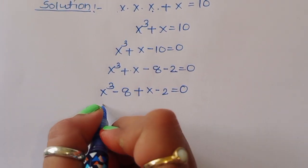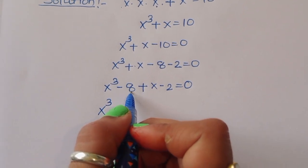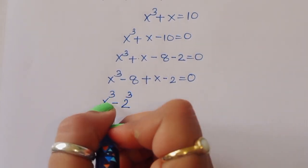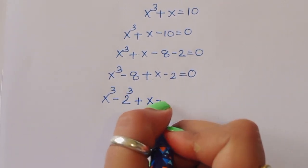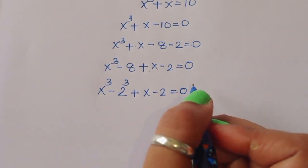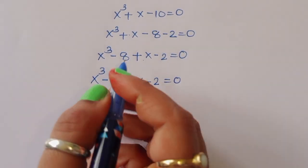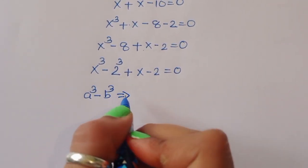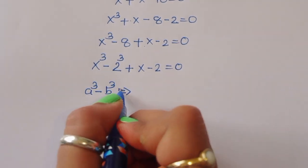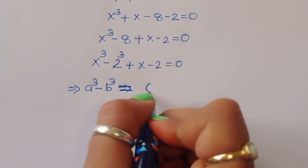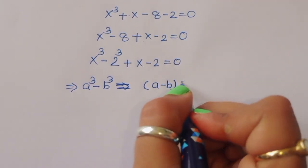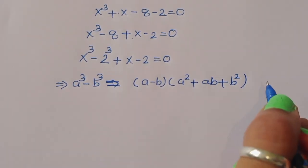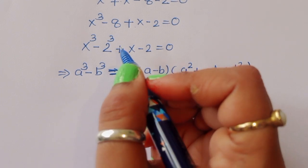Now x cubed minus 8: we can write 8 in cube form as 2 cubed, so this becomes x cubed minus 2 cubed plus x minus 2 is equal to 0. x cubed minus 2 cubed is in the form of a cubed minus b cubed. The formula for a cubed minus b cubed is equal to a minus b times a squared plus ab plus b squared.